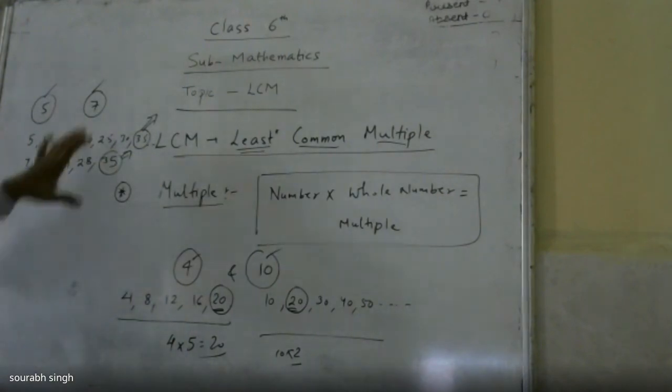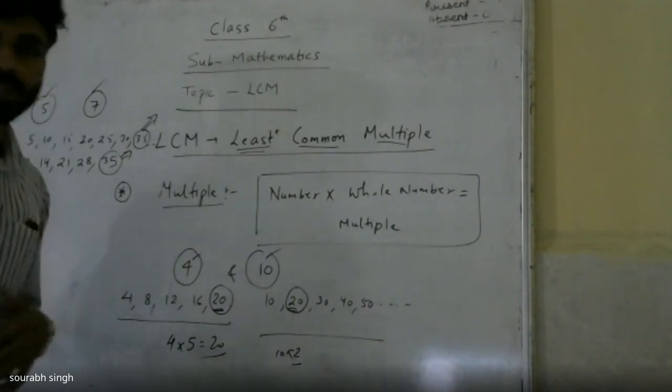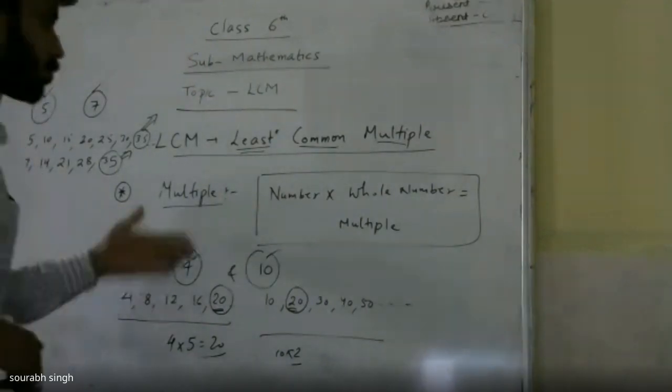So in LCM we have to write the least common multiple between two numbers.